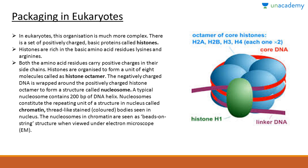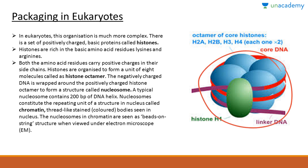In eukaryotes the packaging is much more organized and complex. There is a set of positively charged basic proteins called histones. Histones are rich in basic amino acid residues — lysine and arginine — both of which carry positive charges in their side chains. Histones are organized to form a unit of eight molecules called the histone octamer. The negatively charged DNA is wrapped around the positively charged histone octamer to form a structure called a nucleosome. A typical nucleosome contains 200 base pairs of DNA helix.